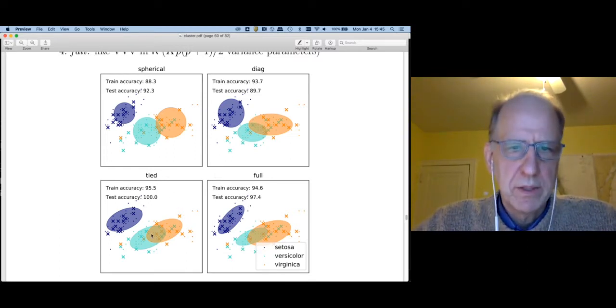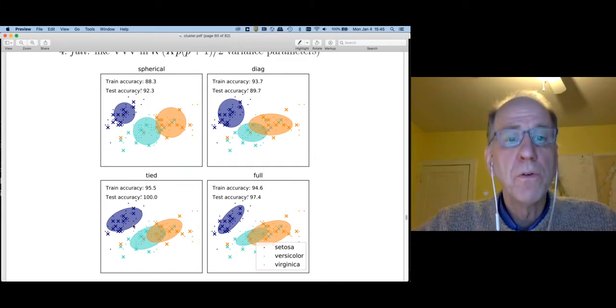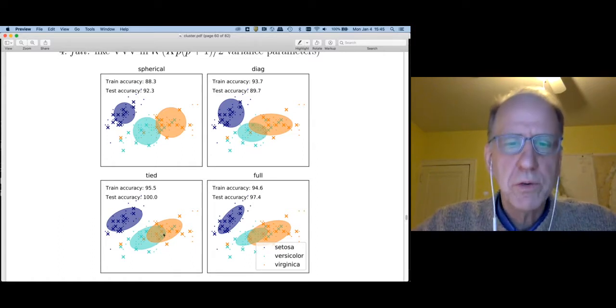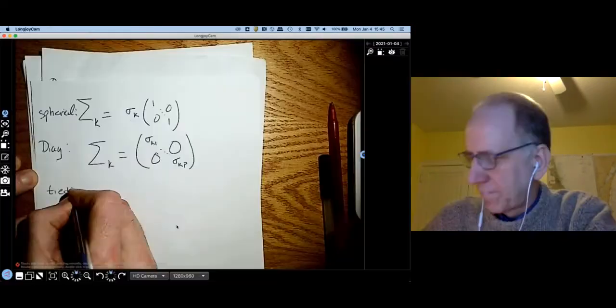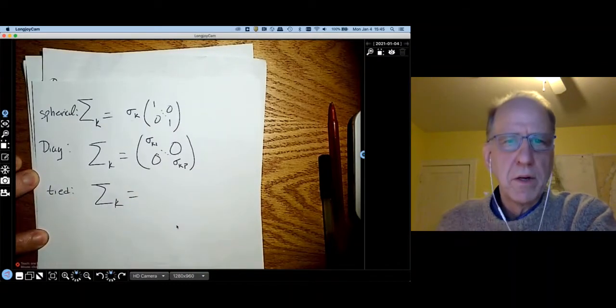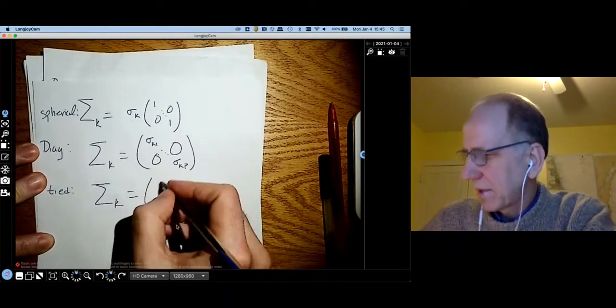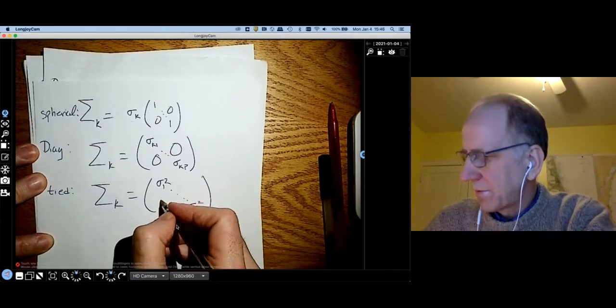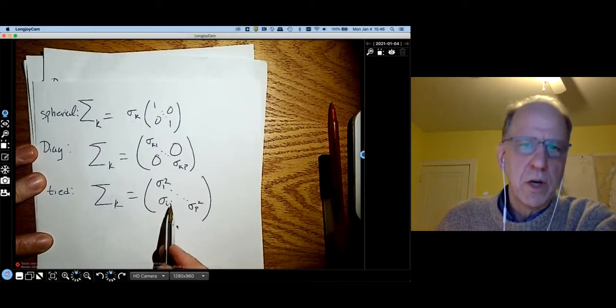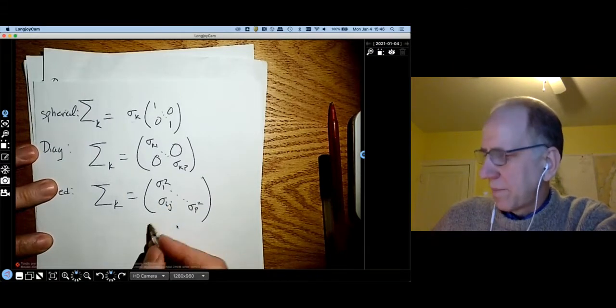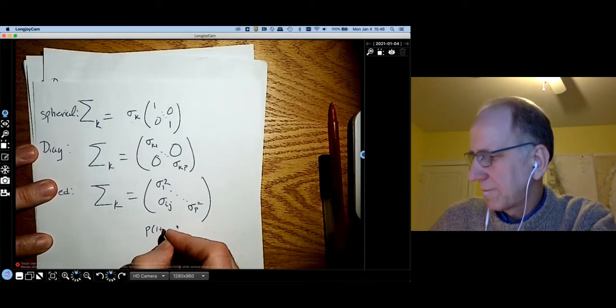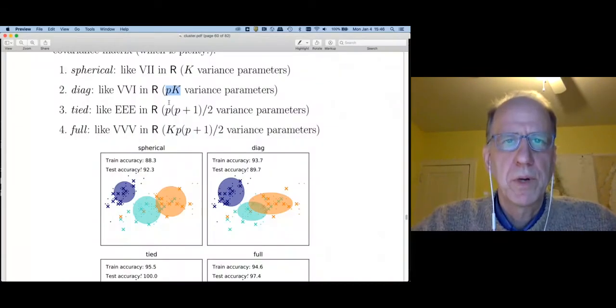The third option that Python offers is called tied. And what they mean by this is they're going to allow for correlations, but these correlations are constrained to be the same in all of the clusters. So tied will give a correlation matrix that looks something like this, sigma 1 squared through sigma p squared, and then we have the full set of correlations off the diagonal. The total number of parameters will just be p times 1 plus p over 2.